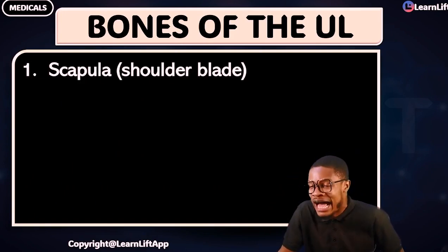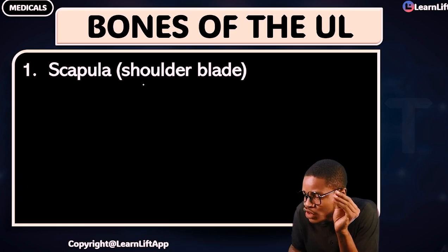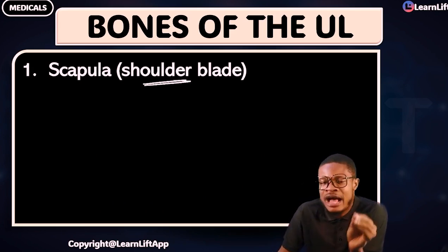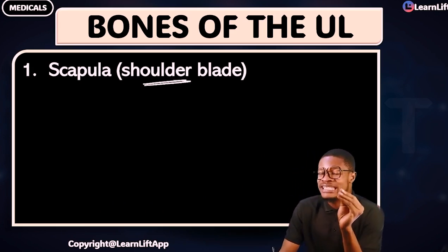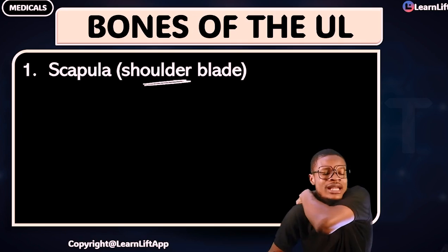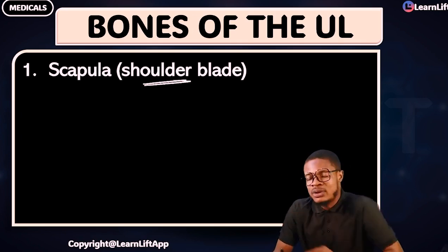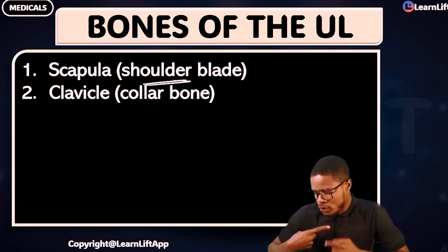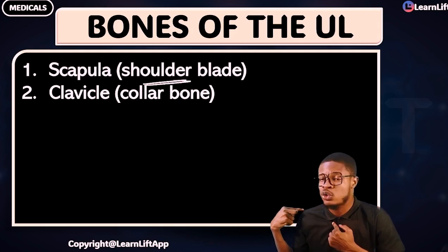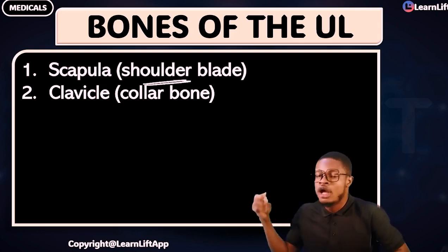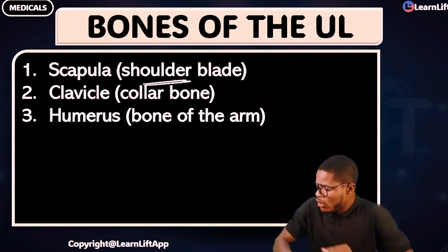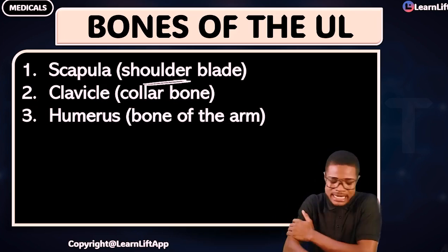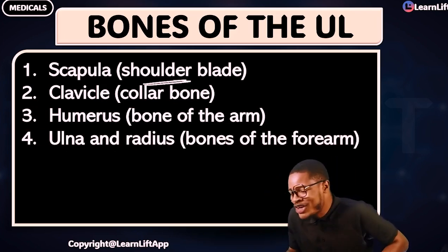Number one is called the scapula — another name for scapula is the shoulder blade. I will show you all of them one by one, but learn them with me first. Scapula, or the shoulder blade — it is at the back. Number two is called the clavicle, or the collarbone, also called the beauty bone. Number three is called the humerus — the bone of the arm. How many humerus? One — that's all.